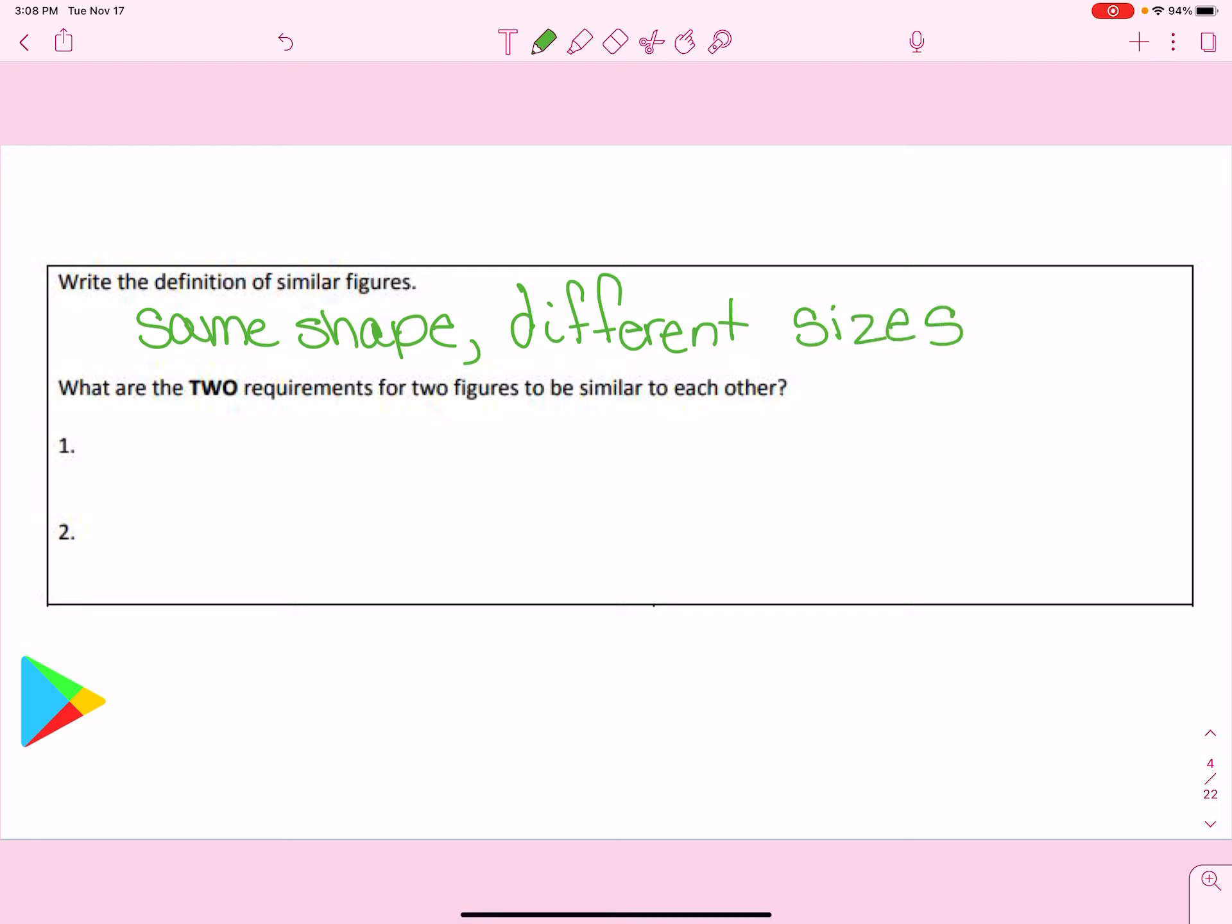So two things have to be true if similar figures are going to be similar to each other. And the first thing is that corresponding angles